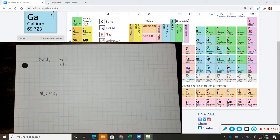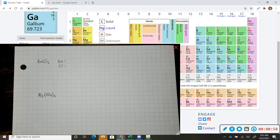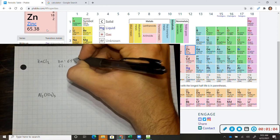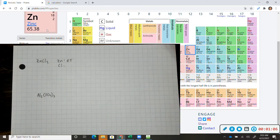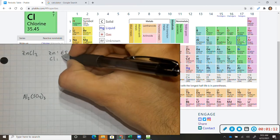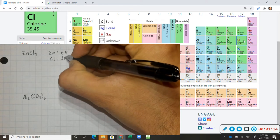And we'll be rounding everything to the nearest whole number. So in this situation, we have zinc right here, with a mass of 65.38, so it rounds to 65. Chlorine, on the other hand, has a mass of 35.45, which rounds to 35.